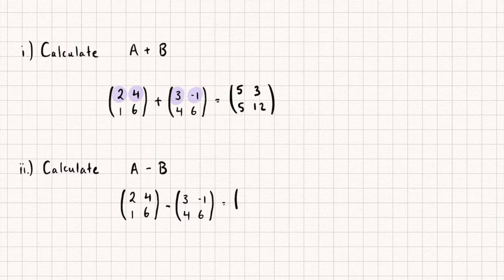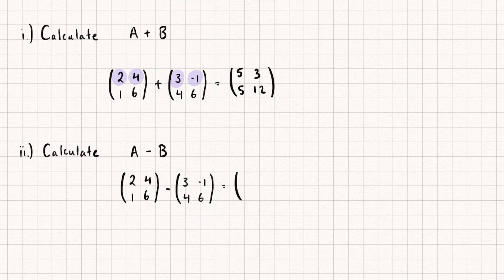And again, this time it's very similar, except rather than addition, we're just subtracting the elements. So 2 subtract 3 is negative 1, 4 subtract negative 1 is positive 5, 1 subtract 4 is negative 3, and 6 subtract 6 is 0.